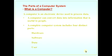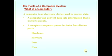Let's see what a computer is. A computer is an electronic device used to process data. A computer can convert data into information that is useful to people. Remember that people do not always understand data, but they understand information. So a computer processes data into information.